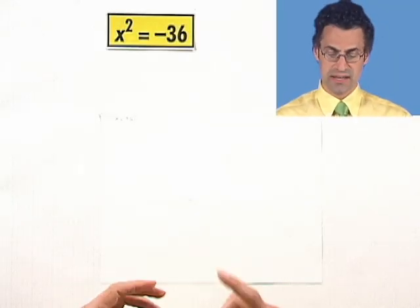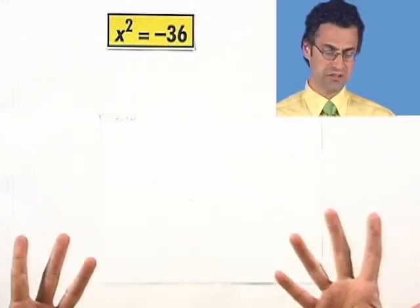You know, we can actually use complex numbers to solve quadratic equations that don't have real solutions. Let's look at this. x squared equals negative 36. How would you solve that?